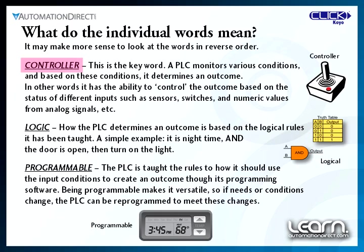Controller is the key word in Programmable Logic Controller. The PLC monitors various conditions and, based on these conditions, determines an outcome. In other words, it has the ability to control devices wired to its output terminals based on the status of devices wired to its input terminals. Logic is how we treat the various conditions we monitor, which determines our final outcome. The decisions are based on logical rules that we teach the PLC by way of its programming software. A simple example might be that we detect someone has opened a door and it's night time, so a light is turned on so they can see where they are stepping.